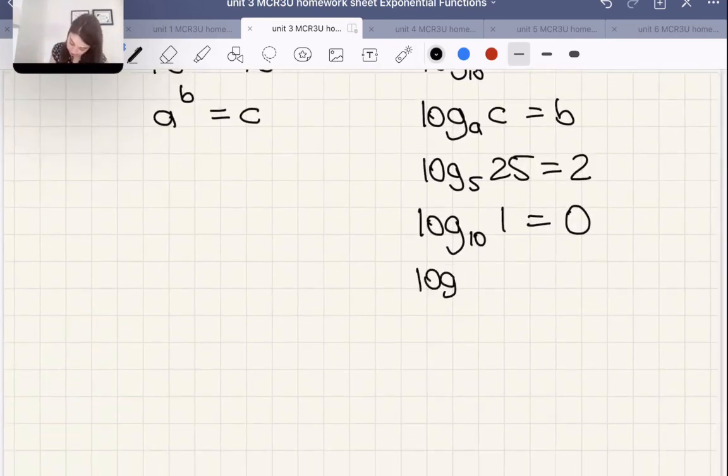Or what about this? Log with a base 4, 64. Well, 4 to the power of what is 64? 4 to the power of 3. That's 64. So it's 3, right?